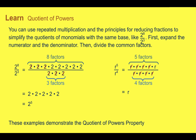Quotient of powers. You can use repeated multiplication and the principles for reducing fractions to simplify the quotients of monomials with the same base, like 2 to the 8th divided by 2 to the 3rd. To do this, first you're going to expand the numerator and the denominator, then divide the common factors.